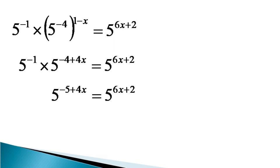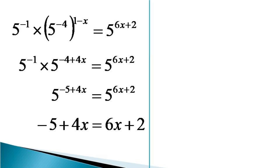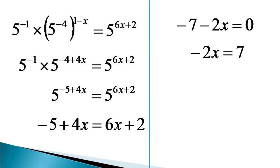Since the bases are equal, the indices also must be equal, which makes minus 5 plus 4x equal to 6x plus 2. Bringing all the terms on the left hand side, we get minus 7 minus 2x equals 0, which gives us minus 2x equals 7, and finally the value of x becomes equal to minus 7 by 2.